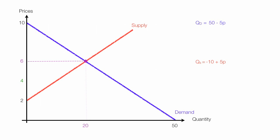Now I'm going to discuss price ceilings with a price ceiling of $4. I'll take the price of 4 and put it into both the demand equation and the supply equation. There's going to be a shortage now — quantity supplied is less than quantity demanded. Price ceilings create shortages.